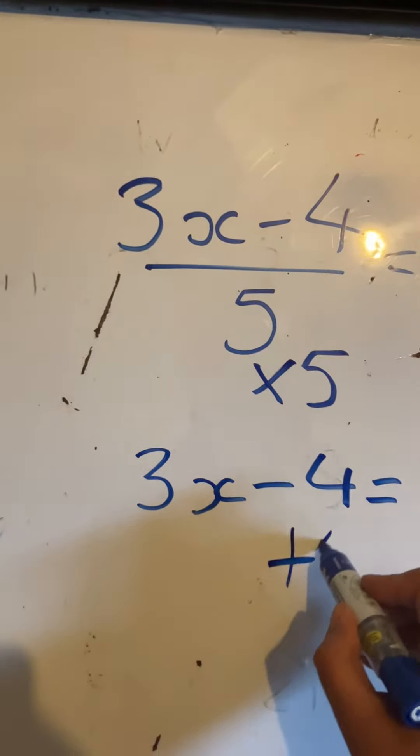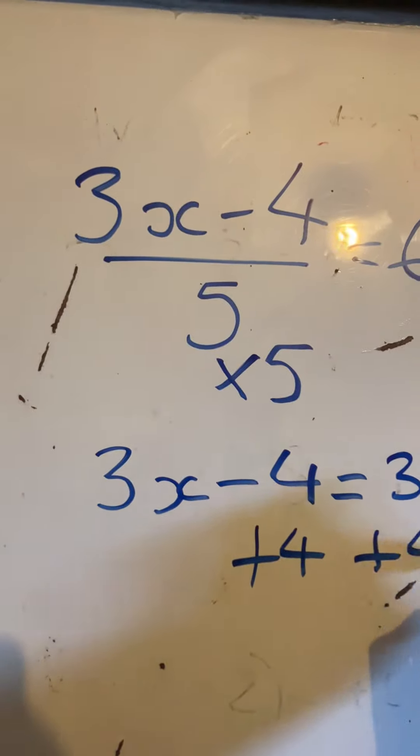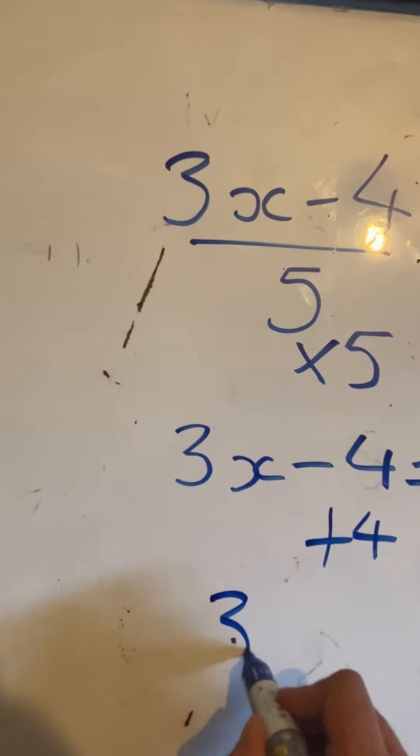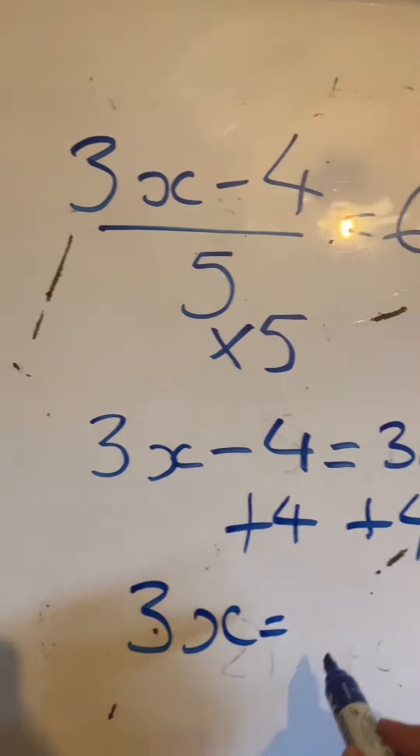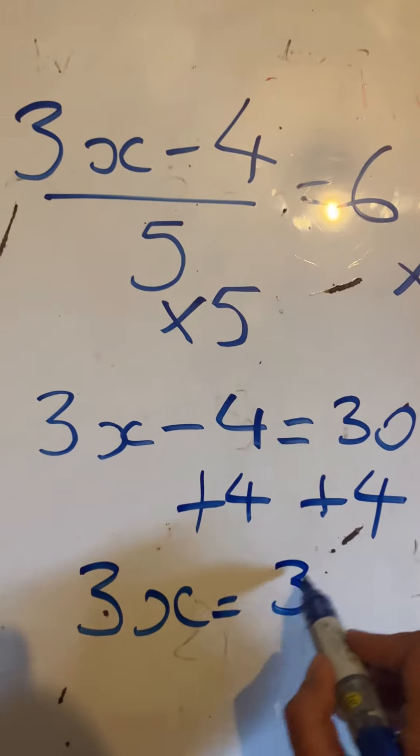Adding 4 to both sides to balance each side respectively, we get 3x is equal to 30 plus 4 which would be 34.